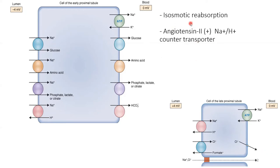Isoosmotic reabsorption is crucial to understand in this context. At the PCT, equal parts of sodium are picked up along with equal parts of water — isoosmotic. If one ion of sodium is transported into the cell and eventually to the blood, one molecule of water accompanies this sodium. The fluid which enters the blood has the same osmolarity — there is no difference in the water-to-sodium ratio. This PCT phenomenon is called isoosmotic reabsorption.